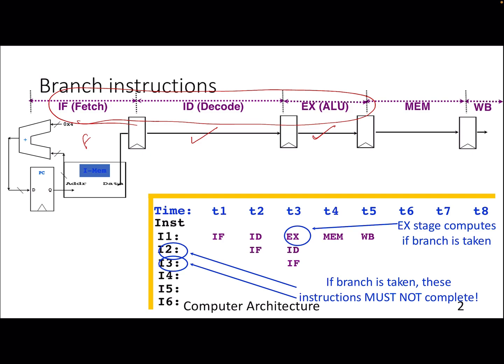The assumption made at the beginning is that the execute stage is where we know all branches are either taken or not taken. That is the worst case. Even for conditional branches, we know at the end of the execute stage, which means there is a two-cycle stall — a bubble for two cycles — and within those two cycles, whatever instructions were fetched are on the wrong path and should be killed.